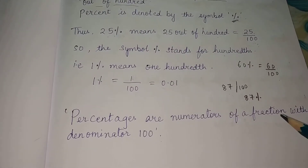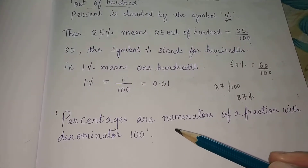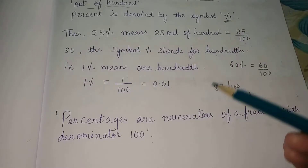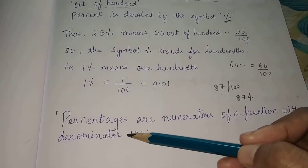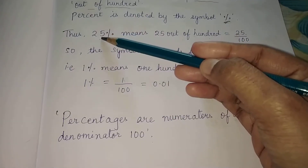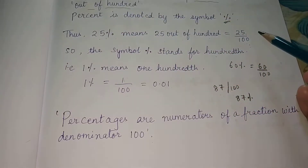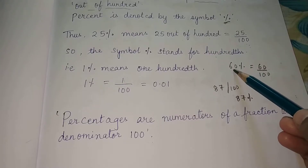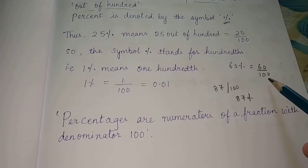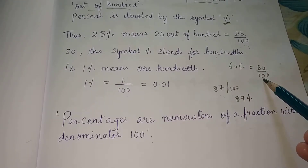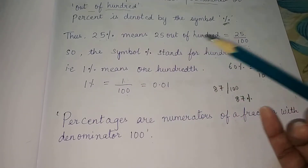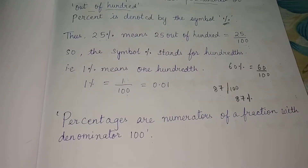Percentages are the numerator of a fraction with denominator 100. Here it was 25% — 25 is written in the numerator with denominator as 100. See, 60% — 60 is written in the numerator with denominator as 100. So percentages are the numerator of a fraction with denominator 100.